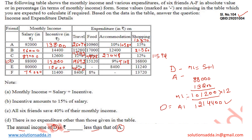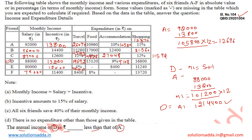Likewise, we can calculate the annual income for person A. For person A, the monthly salary is 92,000 and the incentive is 13,800. Adding these values gives us a monthly income of 1,05,800. Multiplying by 12, we get the annual income of A, which equals 12,69,600.